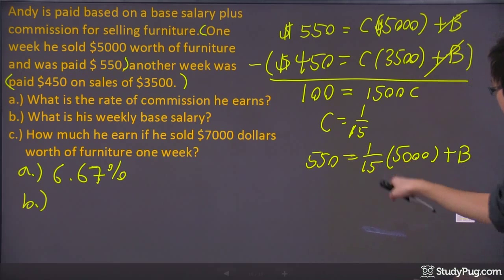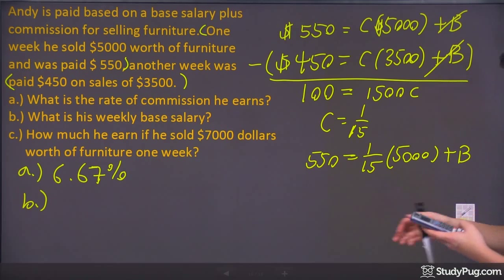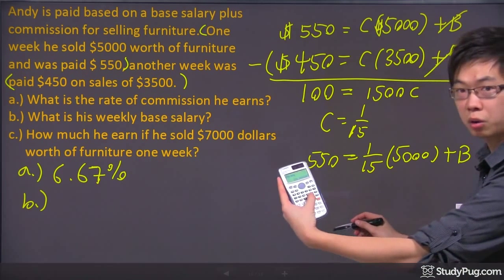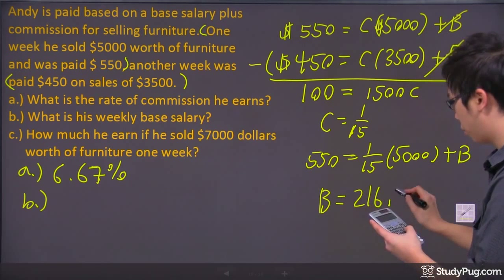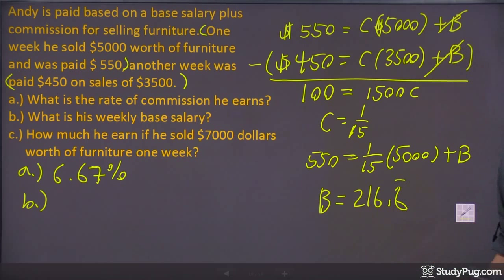And then take the 550 minus this. I got a bunch of fractions. I'm trying to do all the work in my calculator right away. My base salary for this one is actually 216.6 and repeating.